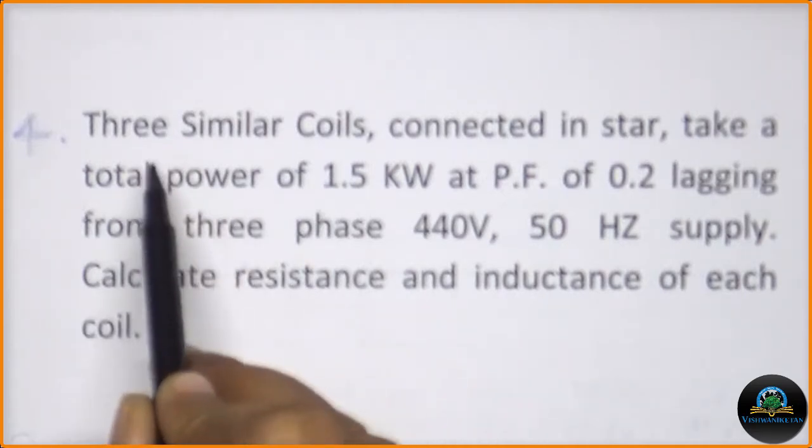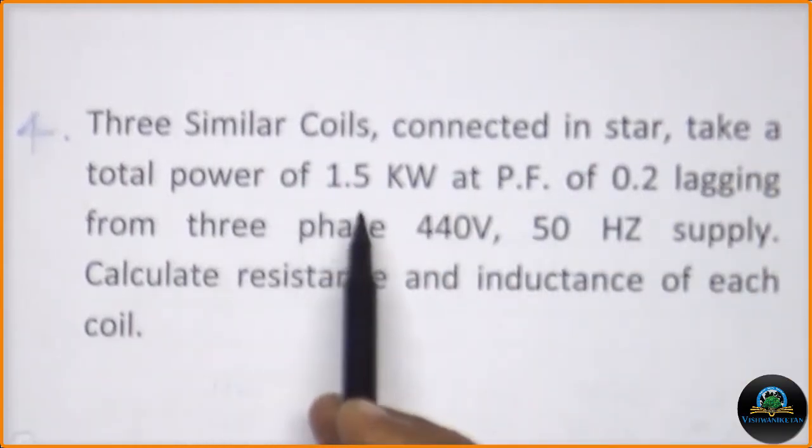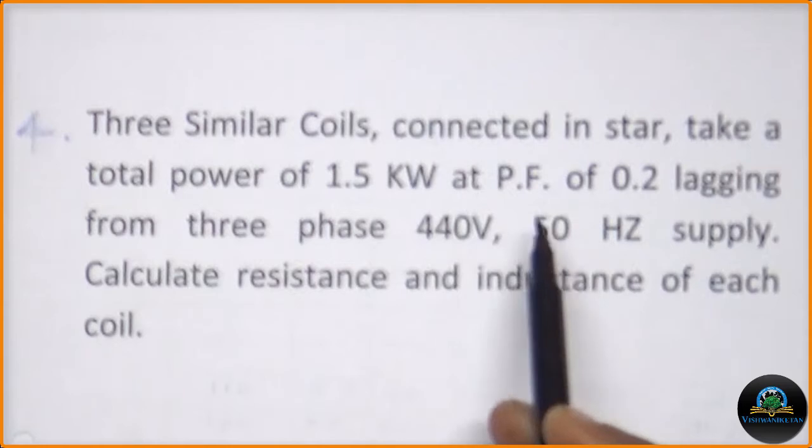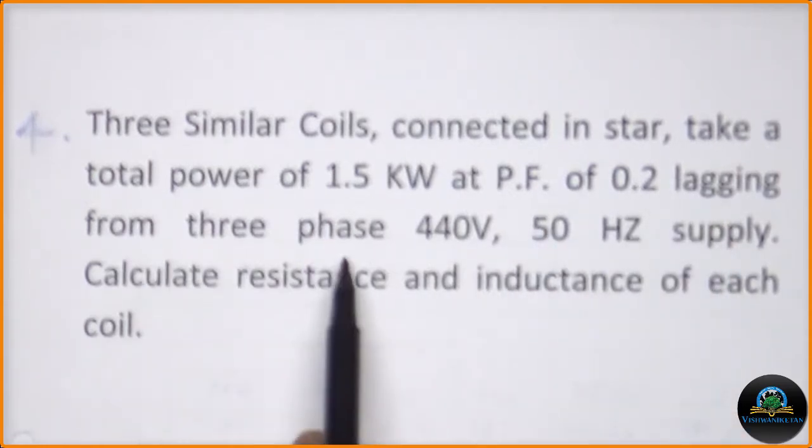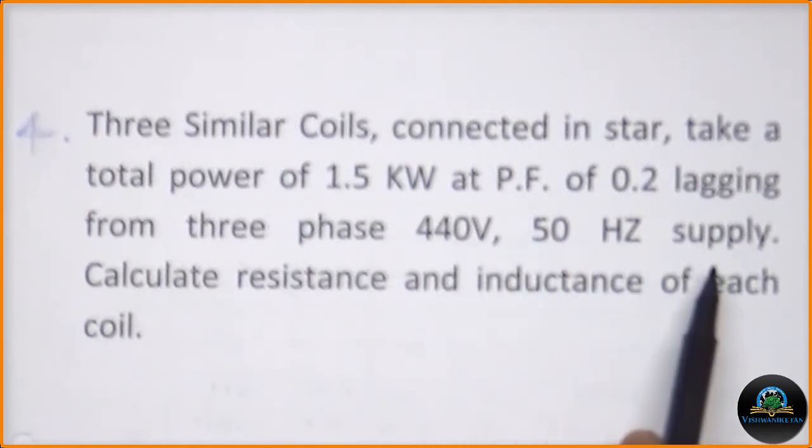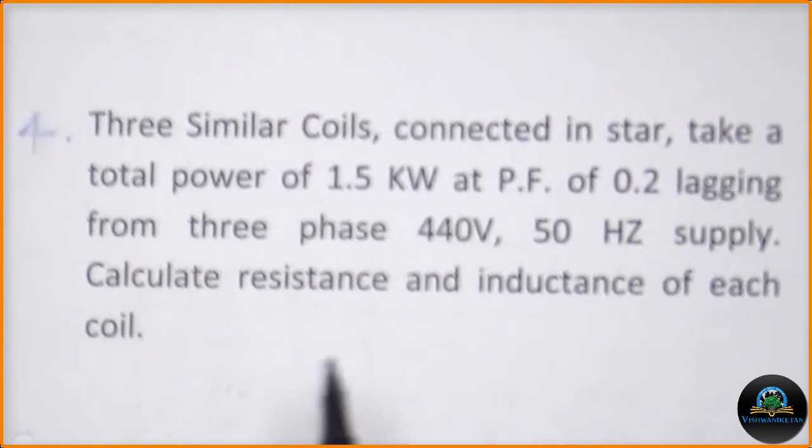Let us read the problem. Three similar coils connected in star take a total power of 1.5 kilowatts at power factor of 0.2 lagging from three-phase 440 volt, 50 hertz supply. Calculate resistance and inductance of each coil.